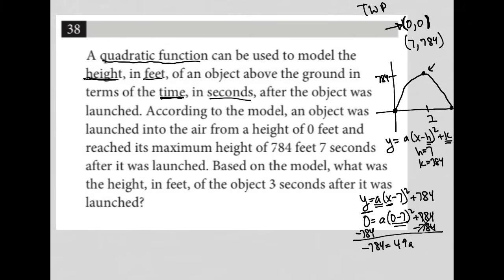And then, of course, that's crossed out. I'm then dividing both sides by 49. So I'll go to my calculator, and I see that negative 784 divided by 49 is 16.